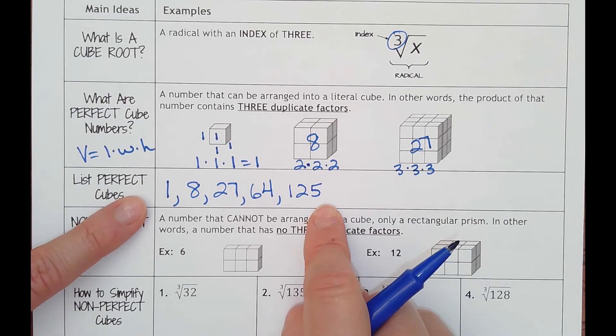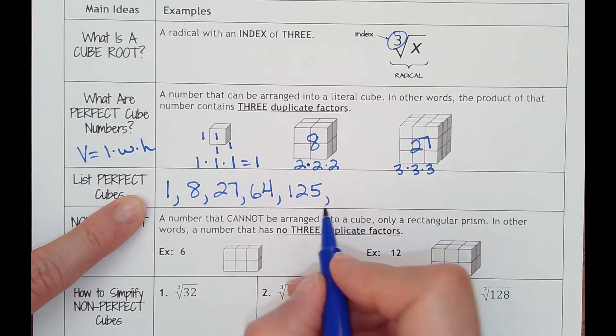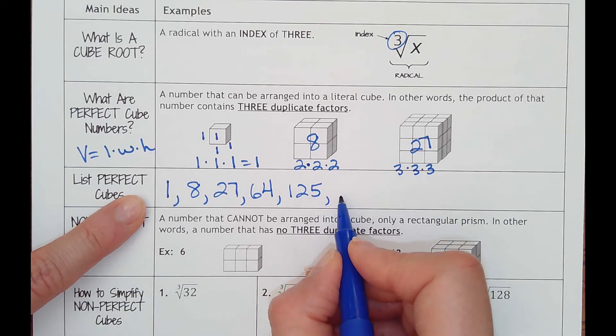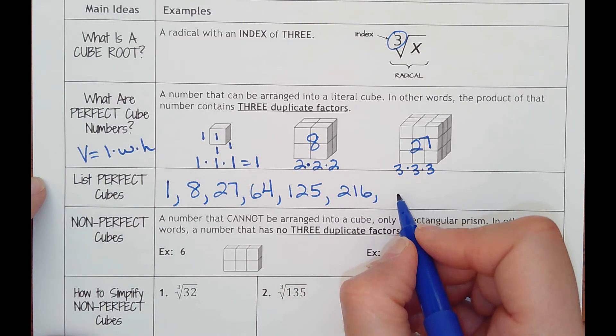Six times six is 36, times six, I'm cheating and looking back, there's 216. Seven cubed, seven times itself three times is 343.